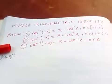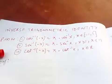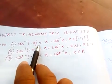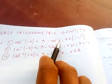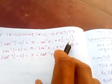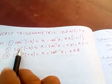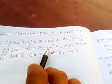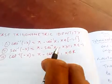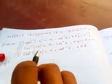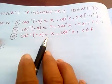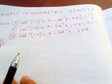Hi friends, today I'm going to discuss inverse trigonometry identities. Number one: cos inverse of minus x is pi minus cos inverse of x, where x belongs to minus one to one inclusive. Number two: sec inverse of minus x is pi minus sec inverse of x, where x is greater than or equal to one or less than or equal to minus one. Number three: cot inverse of minus x is pi minus cot inverse of x, where x belongs to real numbers.